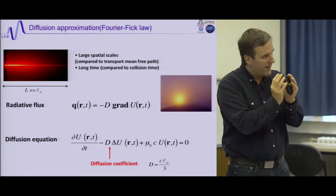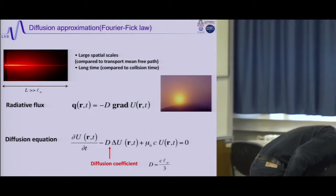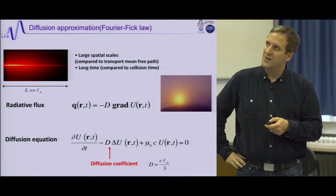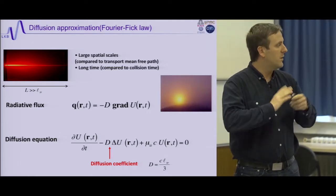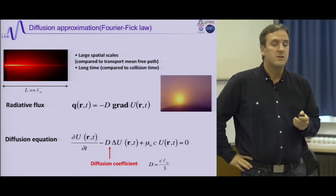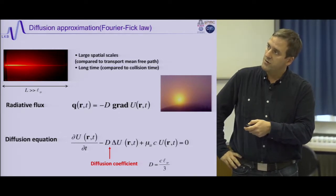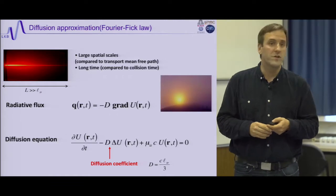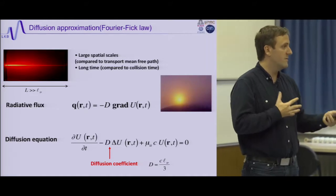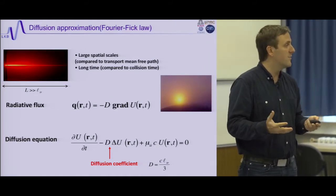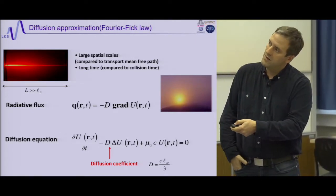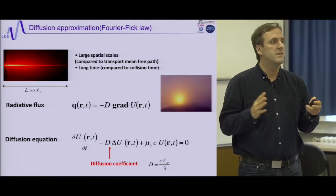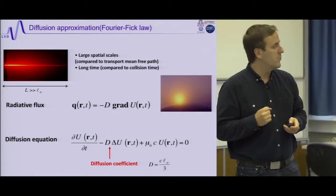At a slightly larger scale, if you don't care about the direction of energy flow, you can work with just the energy density U, and you end up with a diffusion equation — a Fick's law for the energy of light inside tissue. This is very general and also appears in thermal conductivity. You can introduce a diffusion coefficient for light that is linked to the transport mean free path — the quantity that describes how far you need to travel before being isotropically scattered.